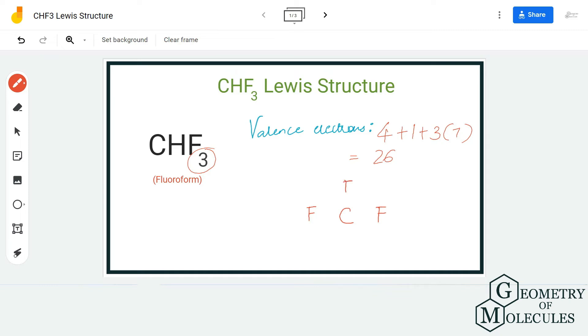Once we have done that, place a pair of electrons between carbon and fluorine atoms, and carbon and hydrogen atoms to show a bond. Doing that, we will be using up eight valence electrons out of the 26 electrons that we have.